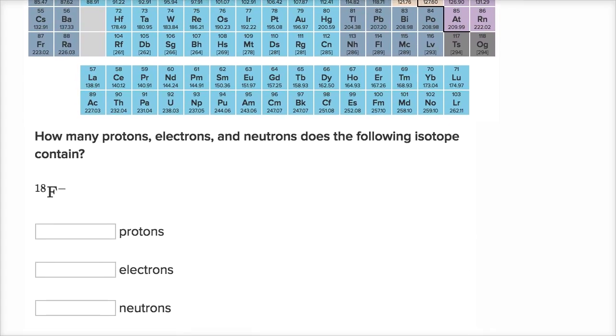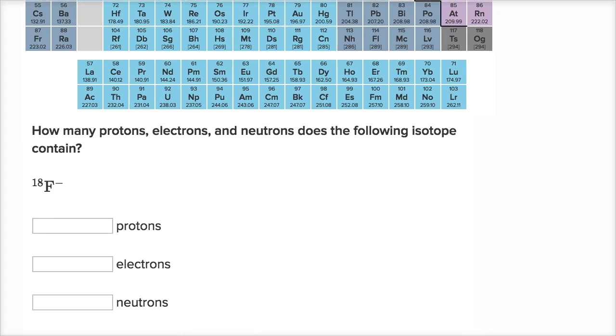Where we are told, we are given some information about what isotope, and really what ion, we're dealing with, because this has a negative charge. And then we need to figure out the protons, electrons, and neutrons. The first thing I would say is, they tell us that this is fluorine. As soon as you know what element we're dealing with, you know what its atomic number is when you look at the periodic table, and you can figure out the number of protons.